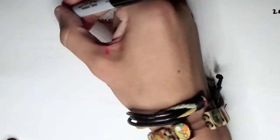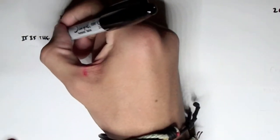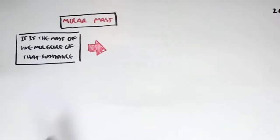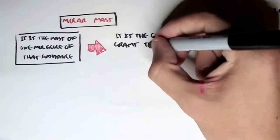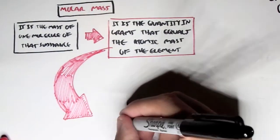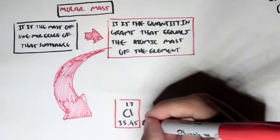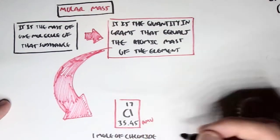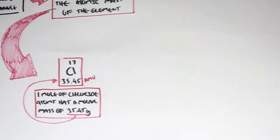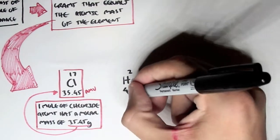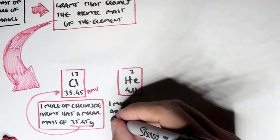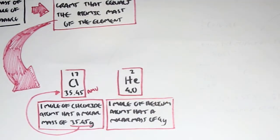Next, let's talk about molar mass. Molar mass is the quantity in grams that equals the atomic mass unit of the element. For example, chloride — atomic number 17, atomic mass unit 35.45 — one mole of chloride atoms gives a molar mass of 35.45. Similarly, helium — atomic number 2, atomic mass unit 4 — one mole of helium atoms has a molar mass of 4 grams.